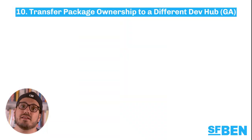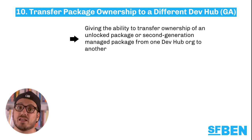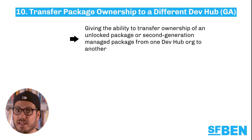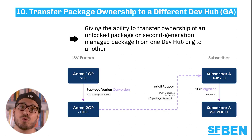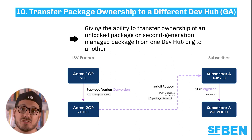As of Summer 23, this feature is now generally available, giving the ability to transfer ownership of an unlocked package or second-generation managed package from one Dev Hub org to another. A transfer can occur internally between two Dev Hub orgs that you own, or you can transfer a package externally to another Salesforce customer, Salesforce partner, or ISV.